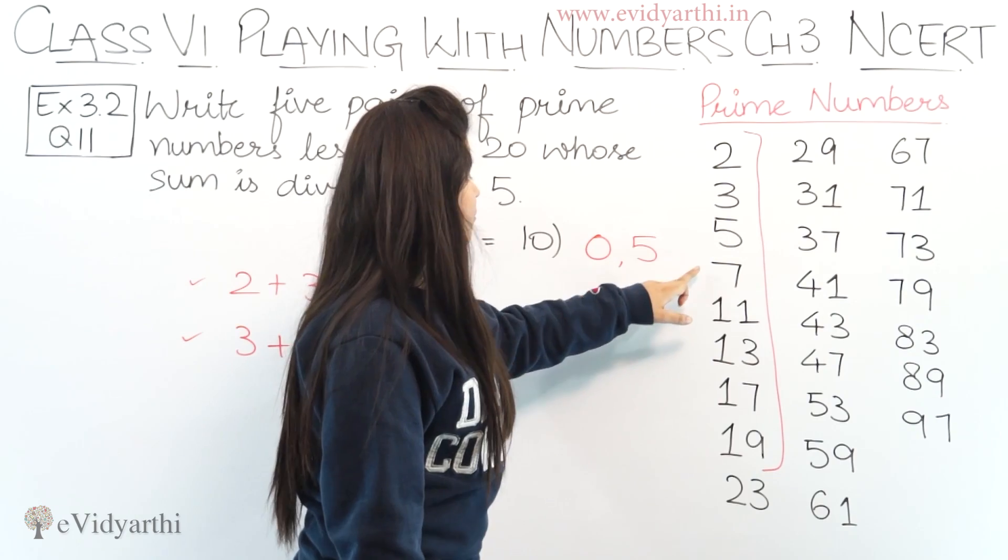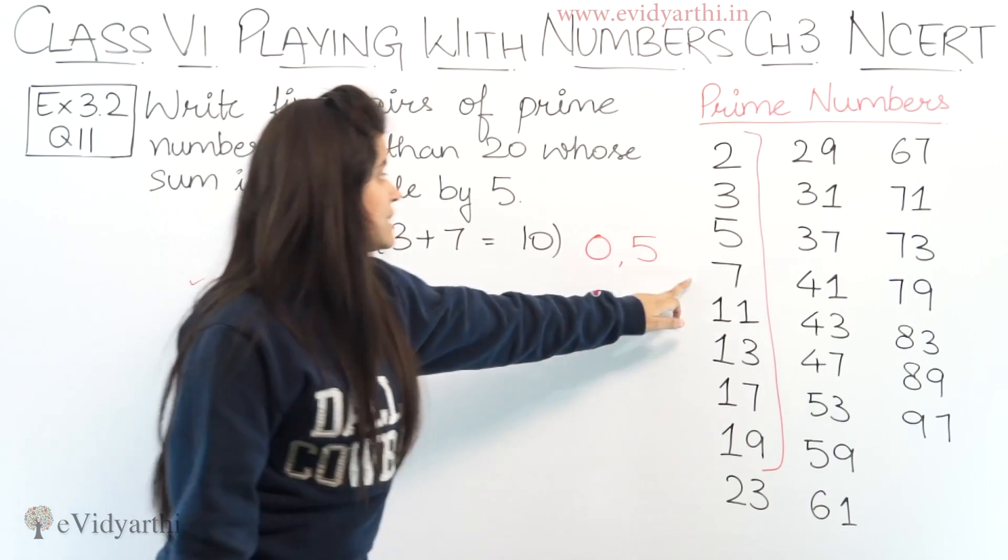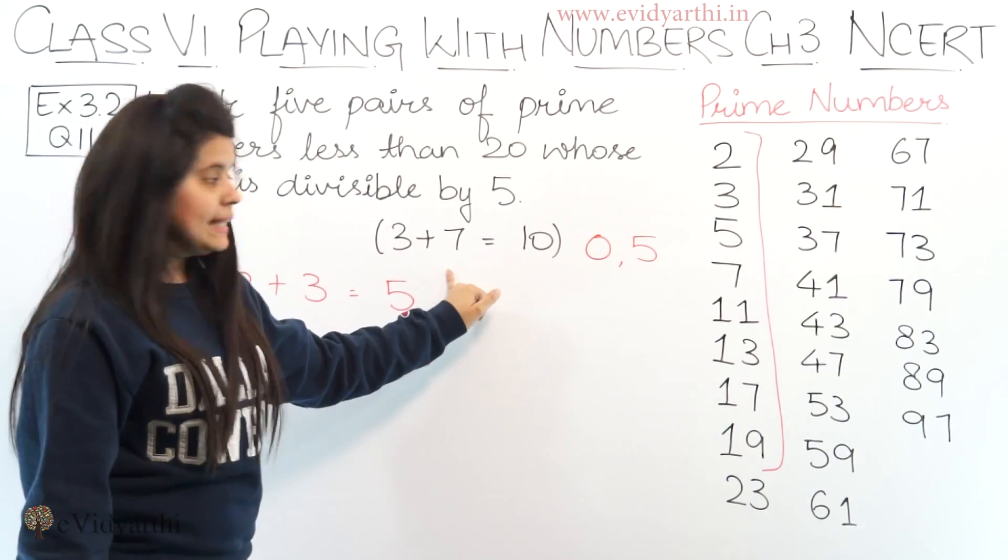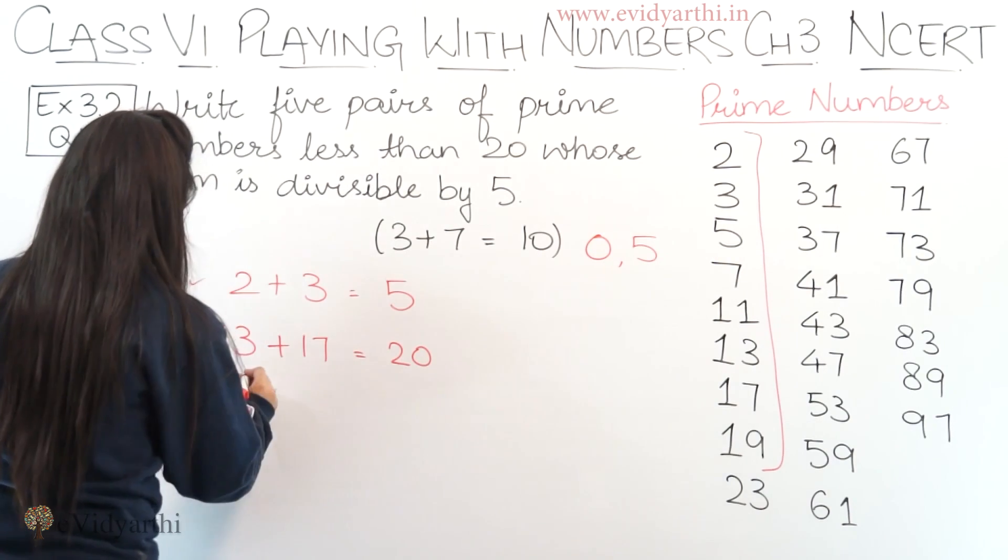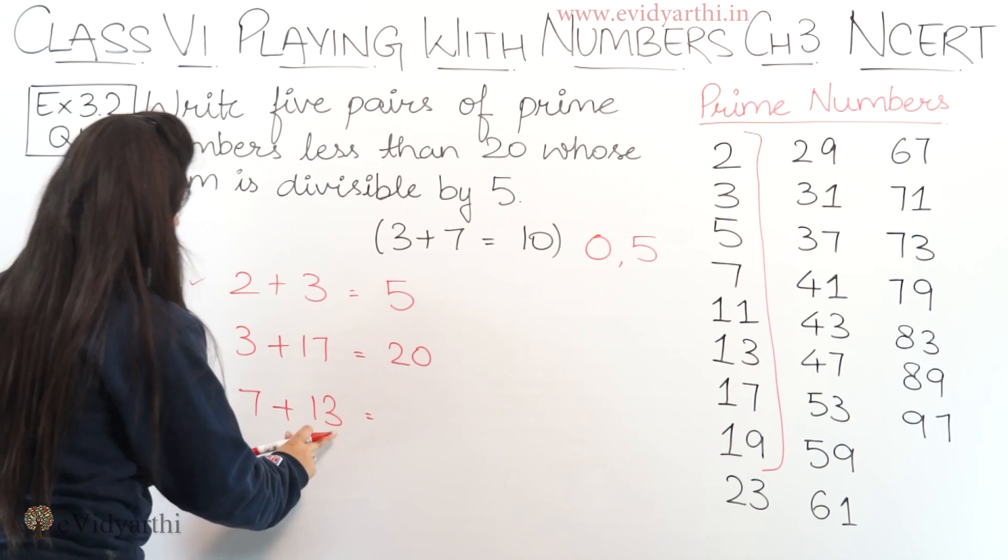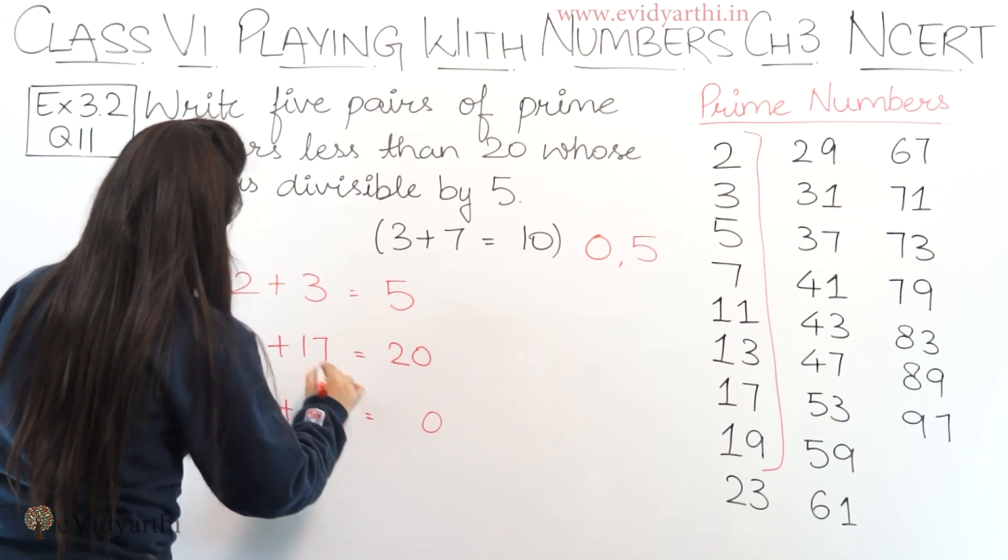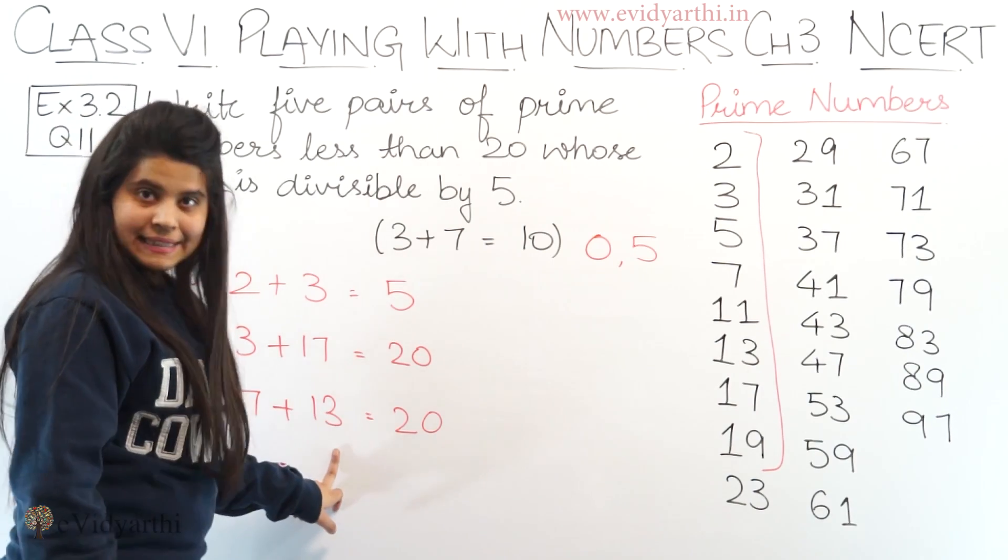Let's see ahead, we have 7. With 7, again if we have 3 at the end it will become 8. But 7 plus 3 is already taken. So we can take 13 with 7. So let's take 7 plus 13. So this will be 3 plus 7 is 10 and this will be 20 again. So this can be our pair: 7 plus 13.